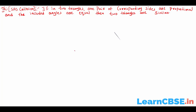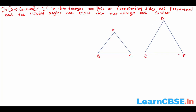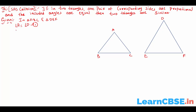Let me get the figure first. Triangle ABC and triangle DEF. Given: in triangle ABC and triangle DEF, angle A equals angle D — let this be equation 1 — and also AB by DE equals AC by DF — let this be equation 2. Required to prove: triangle ABC is similar to triangle DEF.